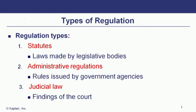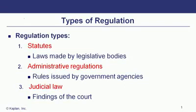We first start with statutes. These are laws made by legislative bodies such as Congress. We have administrative regulations, basically rules issued by government agencies such as the Securities Exchange Commission that govern things such as investment advisors and so on. Judicial law — these are rulings of courts that have precedent and interpretations of the law.